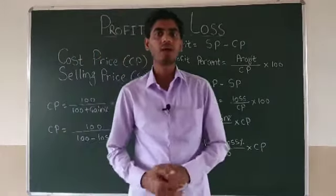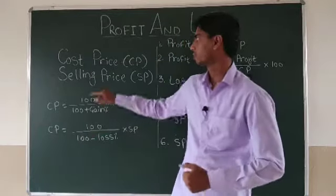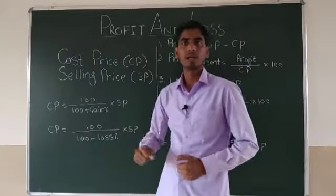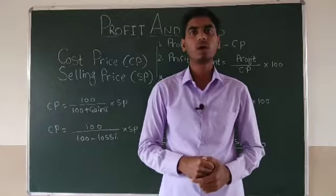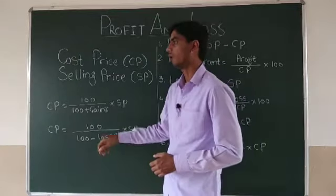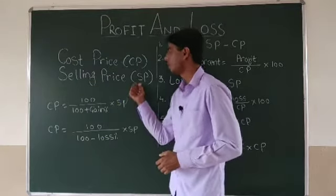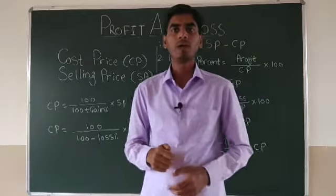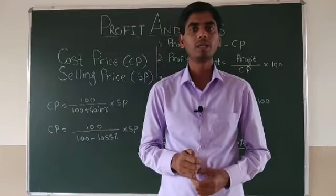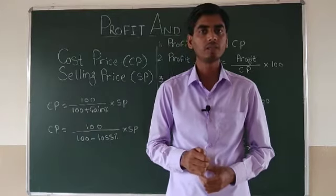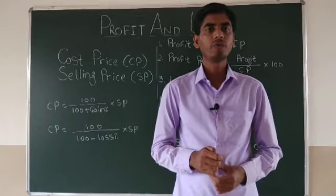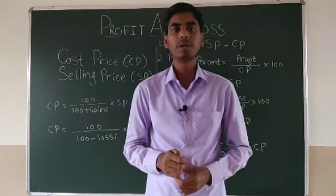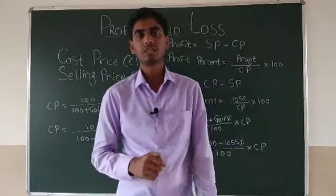The price at which an object is purchased is called its cost price, and we write it as CP. The price at which an object is sold is called its selling price, and we write it as SP. If the selling price is greater than the cost price, there is a profit. If the cost price is greater than the selling price, there is a loss.